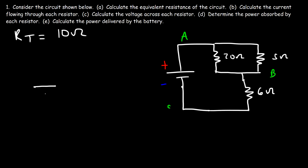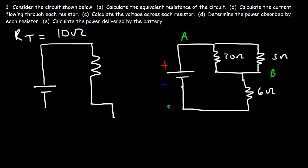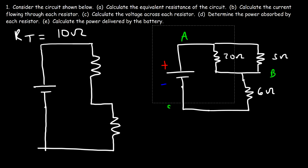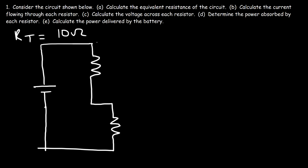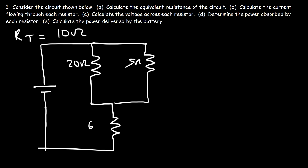I'm going to redraw the circuit to have more space. So this is 20 ohms, this is 5 ohms, and this is 6 ohms. The voltage of the battery is 20 volts and the total equivalent resistance is 10 ohms. Now that we have the equivalent resistance, we can calculate the total current that flows in the circuit.